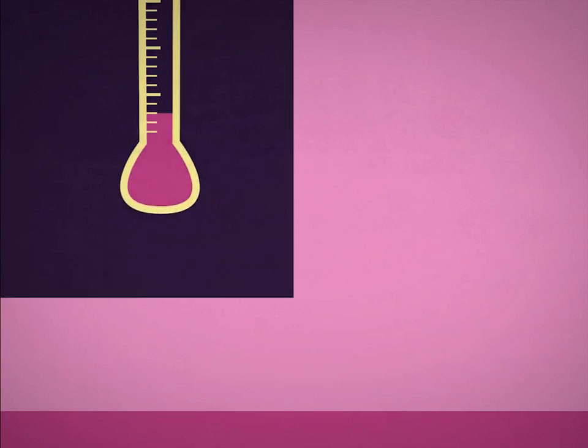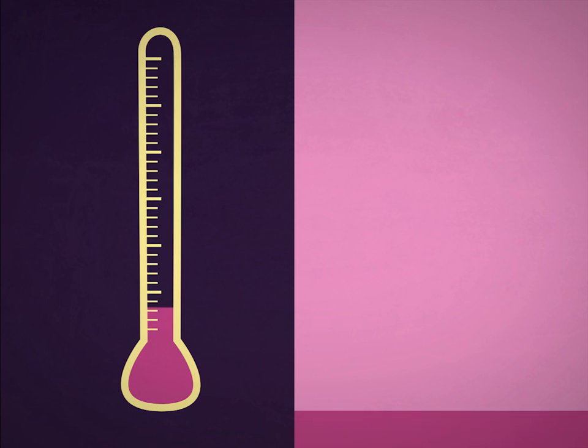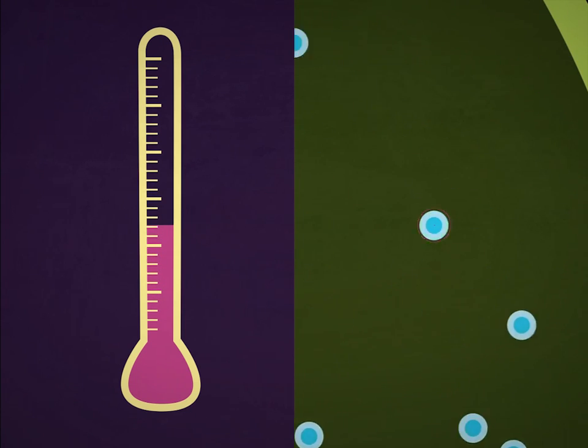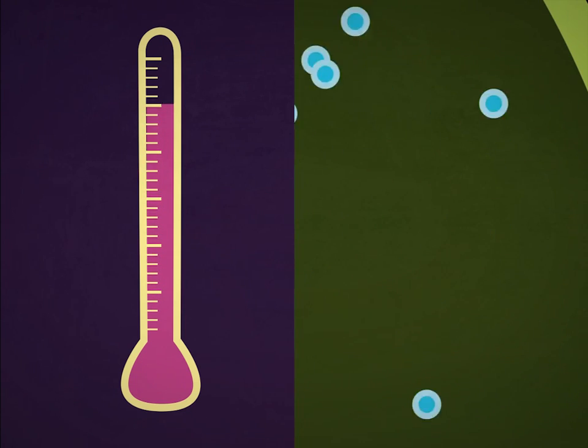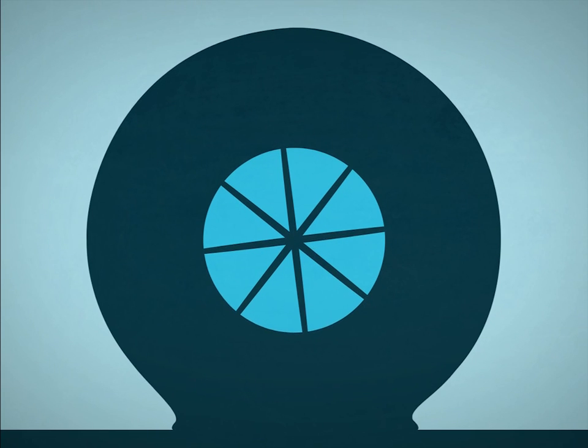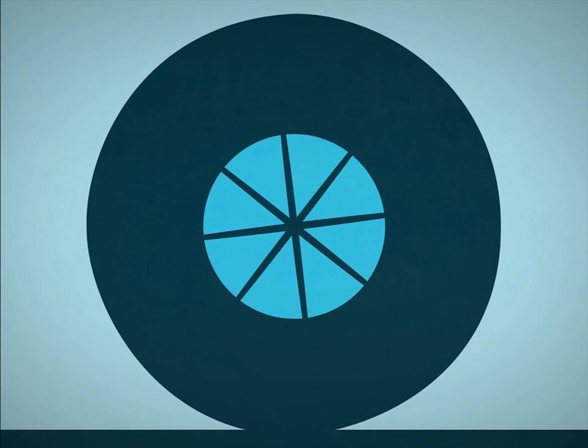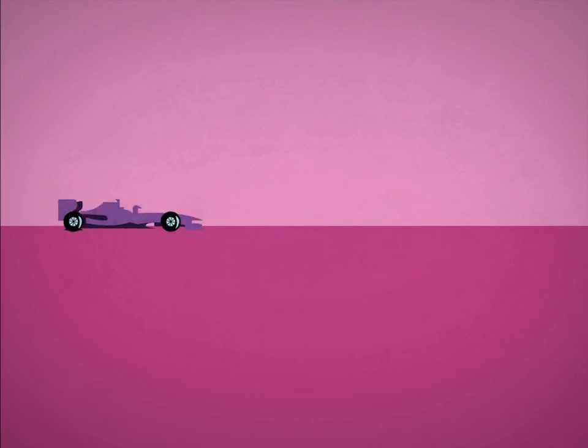But during the race, the car tires get hot due to friction with the road. The gas pressure inside each tire increases. The tire hardens and less of it is in contact with the road. The car goes faster.